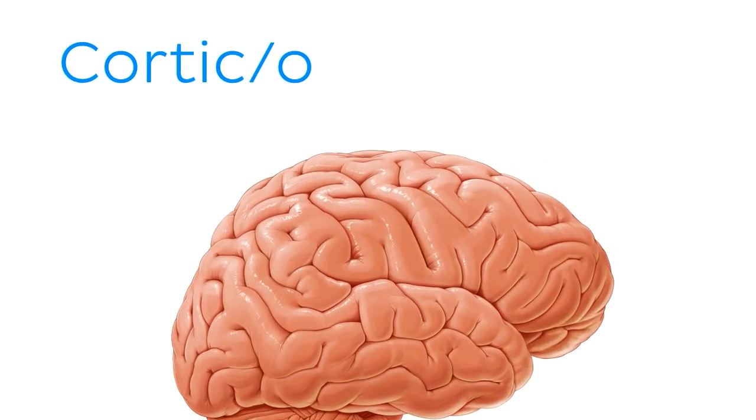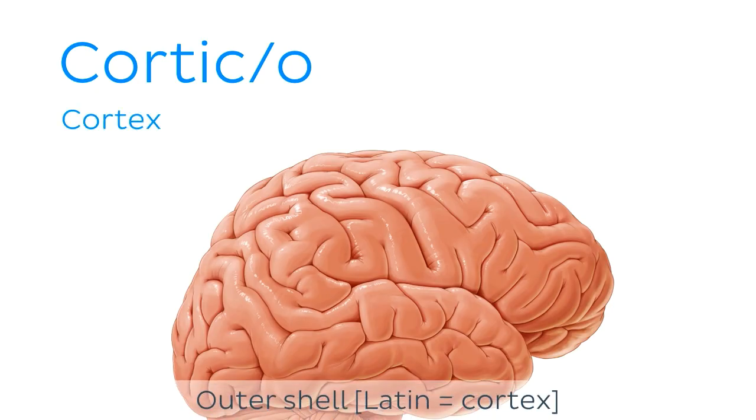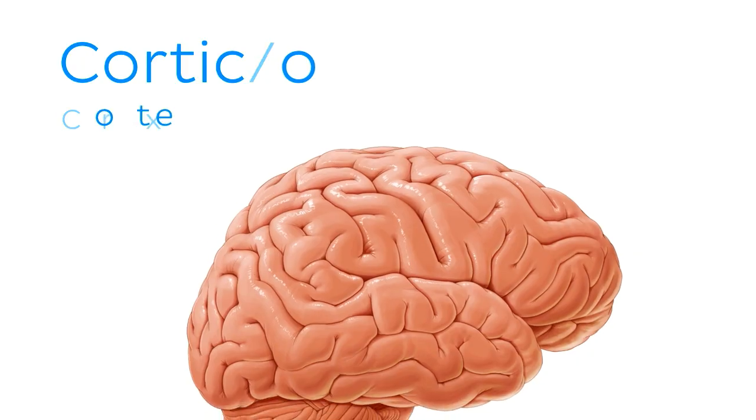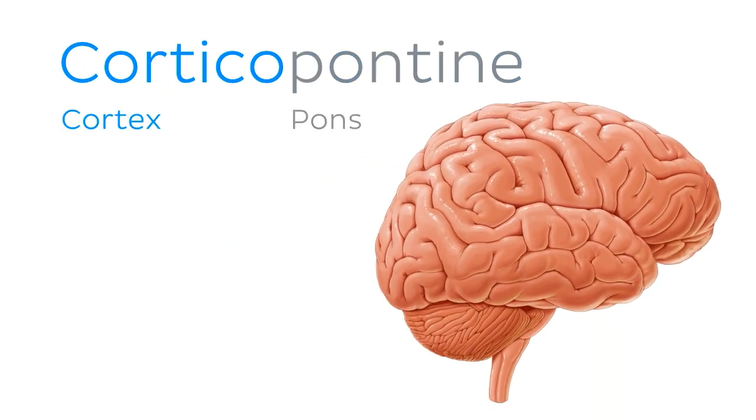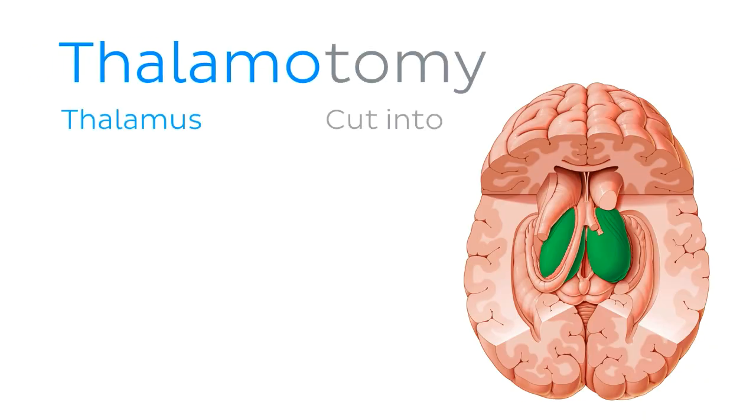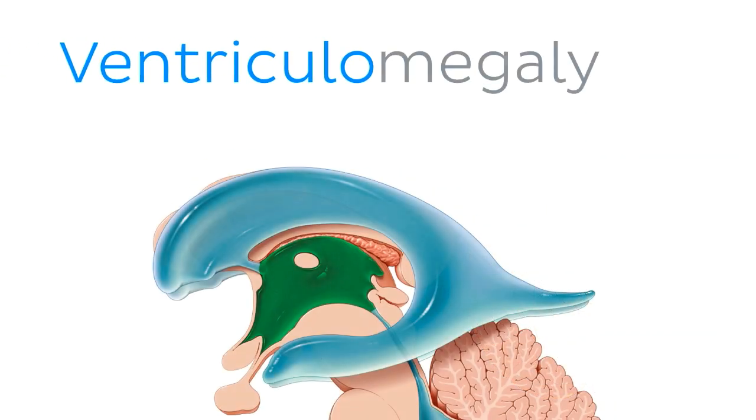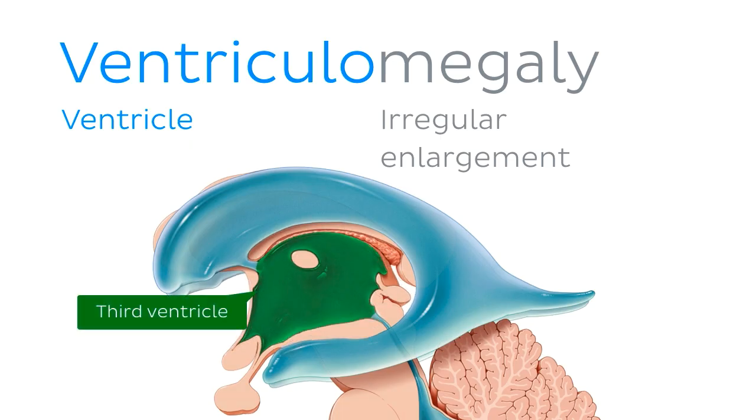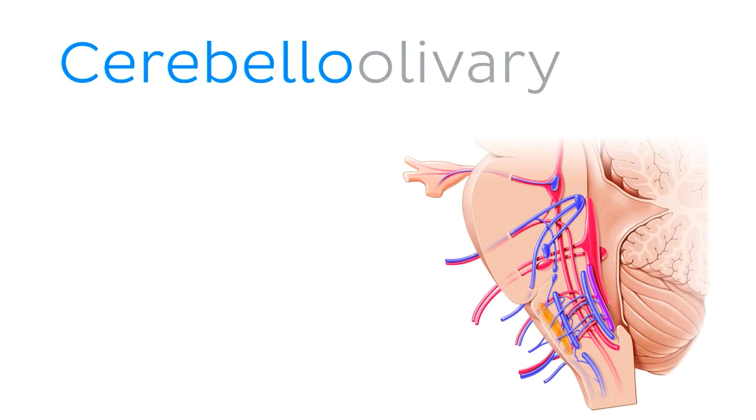Cortic or cortico more specifically refers to the cerebral cortex and is most often used to describe neurological pathways. For example, corticopontine, running from the cerebral cortex to the pons. Now, when looking at the names of specific parts of the brain, almost all of them lend themselves as root words used in anatomical terminology. For example, thalamotomy, the destruction or removal of part of the thalamus. Ventriculomegaly, which is an enlargement of the ventricles of the brain. Cerebello-olivary, from the cerebellum to the inferior olive.